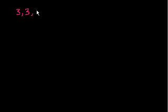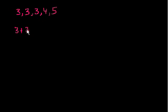When we first started talking about central tendencies and how we measure average, we talked about the arithmetic mean, where you just add up the numbers and divide by the count. So let's say our population is three 3's, a 4, and a 5. If we wanted the population mean, we would add all the numbers: 3 plus 3 plus 3 plus 4 plus 5.